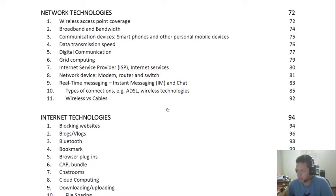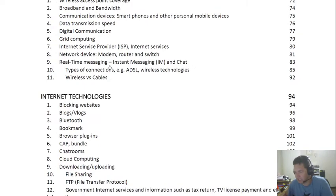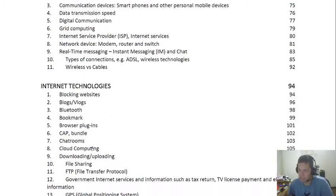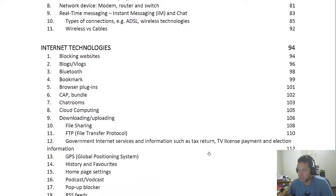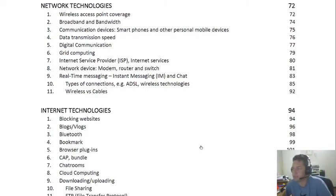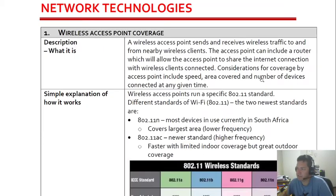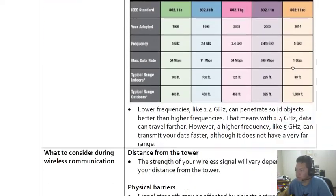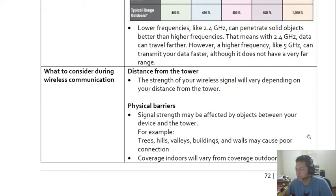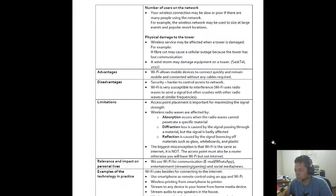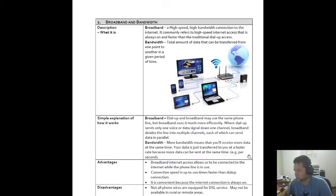We can see here the stuff we just talked about: grid computing, wireless vs cables, broadband. If you click on the page, it will take you to that section. The next section also covers all the Internet technologies — they talk about FTP and government services as well. So when you go to page 72, they will talk you through what a wireless access point is and give you some examples of how it works. I would suggest you go through this whole section.